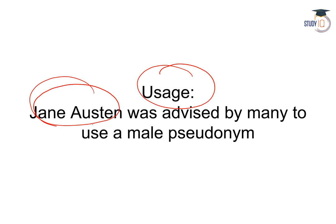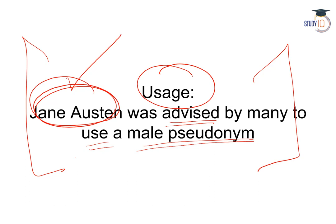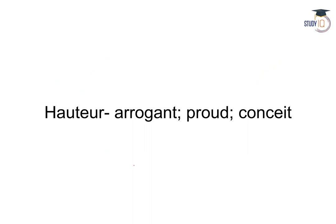Jane Austen, the famous author who also wrote Pride and Prejudice, was advised by many to use a male pseudonym — unko ek male false name use karne ka sujhav diya gaya tha, taki adhiktar unki pustakein bik sakein, kyunki yeh bohot hi purane zamane ki baat hai.